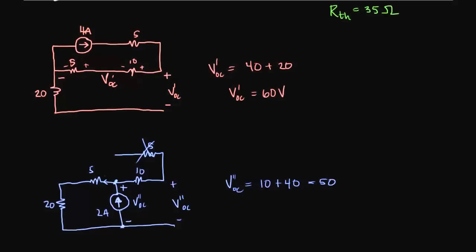So now let's combine our results. And remember that V on the open circuit is equal to V Thevenin, and that these are equal to the sum of the contributions of both sources.